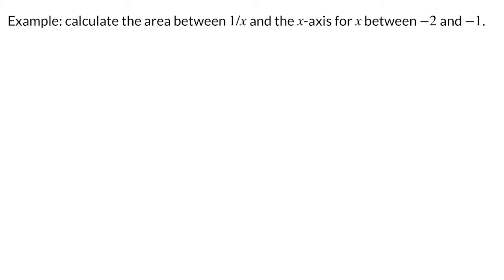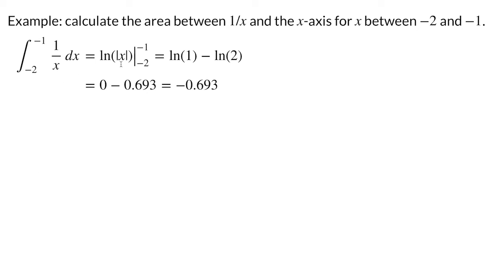Let's do another example. Let's calculate the area between the graph of the function 1 over x and the x-axis over the interval of x from negative 2 to negative 1. We begin by calculating the integral from negative 2 to negative 1 of 1 over x dx. The antiderivative of 1 over x is the logarithm of the absolute value of x. So by the fundamental theorem of calculus, we evaluate that logarithm at x equals negative 1 and then subtract the logarithm at x equals negative 2. The absolute value eliminates the negative signs, so we have the logarithm of 1 minus the logarithm of 2. The logarithm of 1 is 0 and the logarithm of 2 is 0.693.